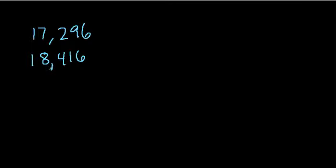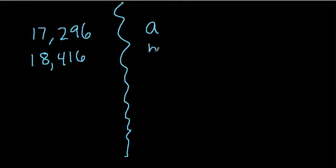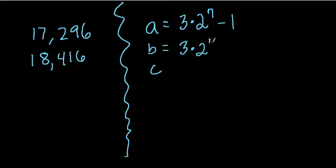And there is a formula to deal with this and the other pairs, and I'll just mention it. So let's say we have A, B, and C. If A equals 3 times 2^n minus 1, and B equals 3 times 2^(n-1) minus 1, and C equals 3 squared times 2^(2n-1) minus 1.